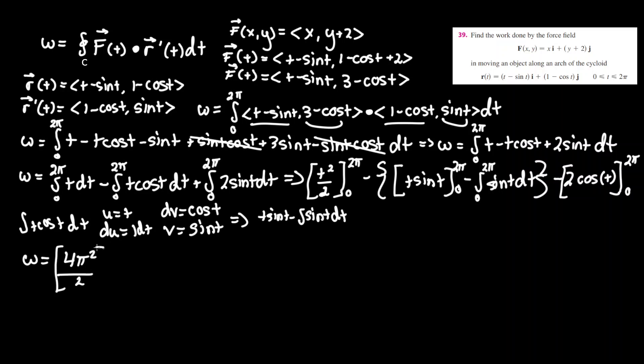4pi squared over 2 minus, let's try to put in some boundaries here, this will be plugging 2pi for t.